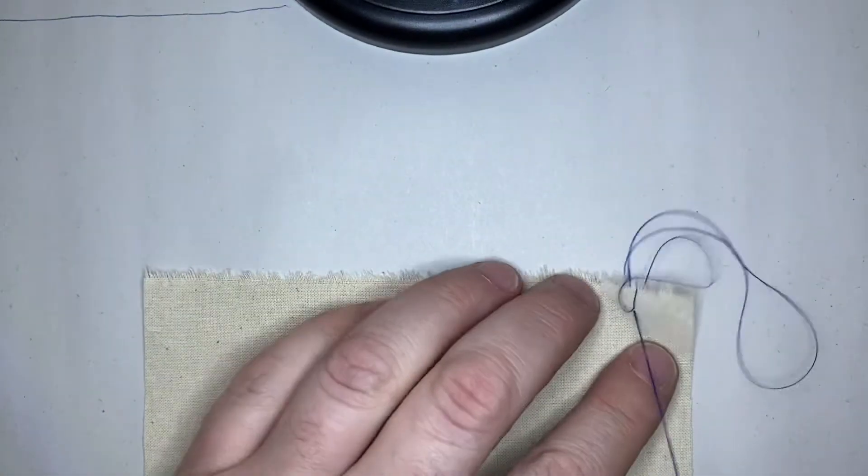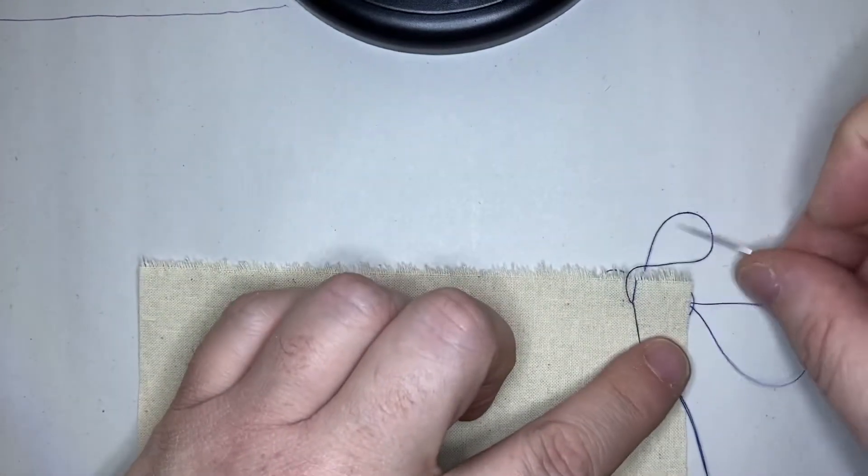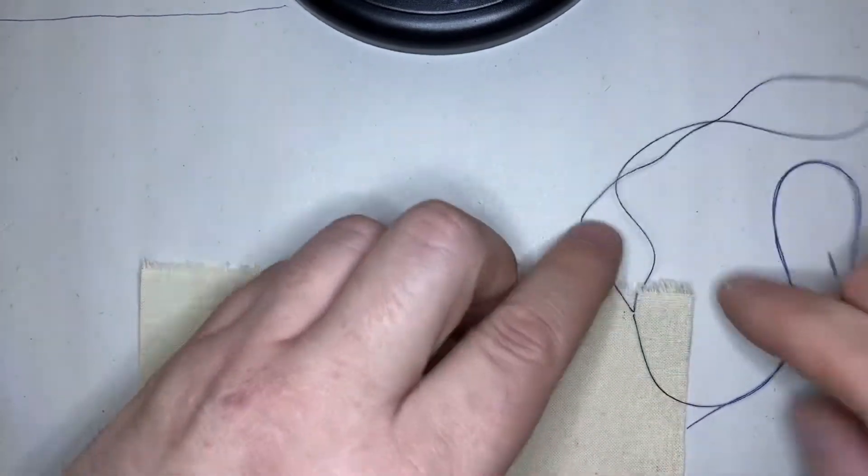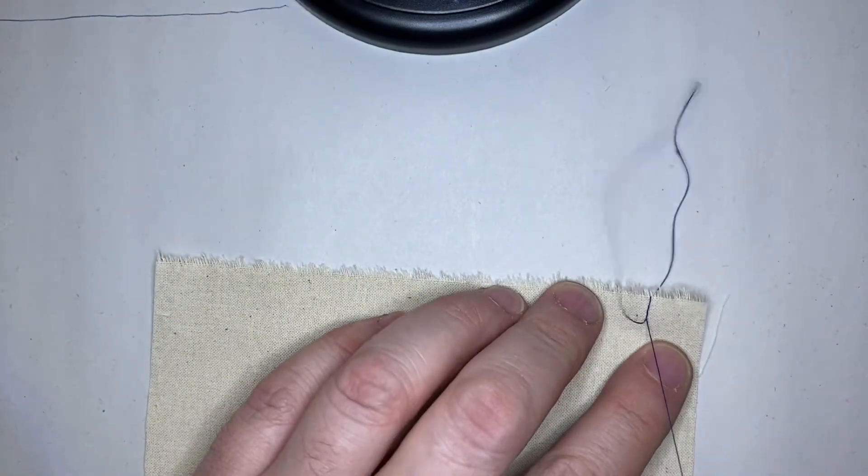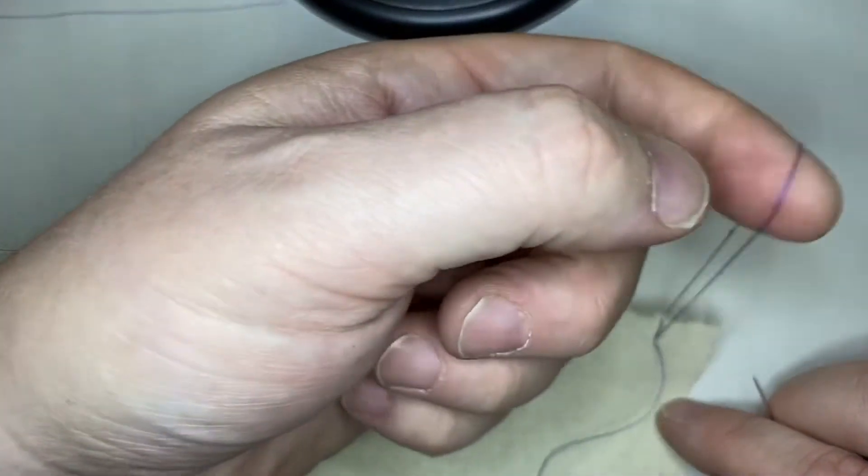So, as you pull this down, make it so you can see, I am pulling this thread through the fabric and this loop is getting smaller and smaller, right? There's a front and a back side to this.